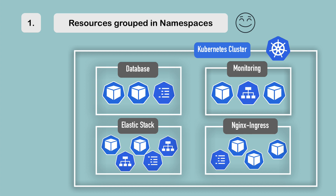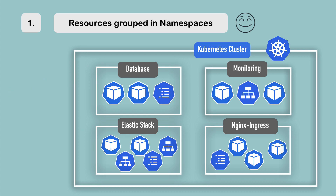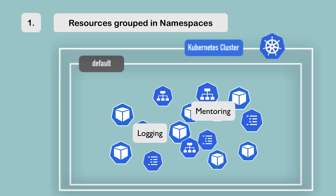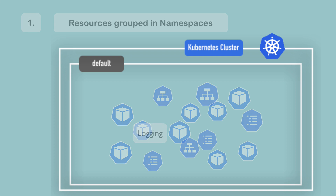According to the official documentation of Kubernetes, you shouldn't use namespaces if you have smaller projects and up to 10 users. Personally, I think it's always a good idea to group your resources in namespaces because even if you have a small project and 10 users, you might still need additional resources for your application like a logging system and monitoring system. Even with a minimum setup, you can already have too much to just throw everything in a default namespace.